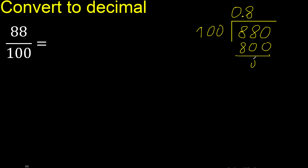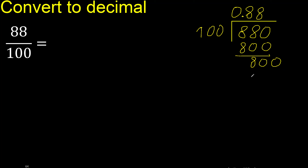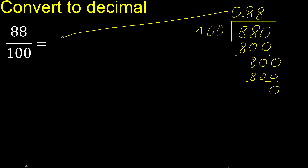Subtract — there is no remainder, therefore complete with 0 point only once. 800. 100 multiplied by which number? Multiplied by 8 is 800. Subtract: 0. Therefore, finish.